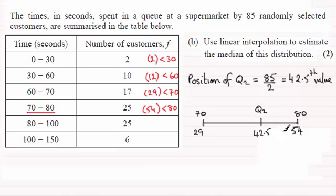And all we need to do is set up a ratio equation, a comparison equation. And so what I do is I look at comparing this width here from 70 to Q2 with this width below.